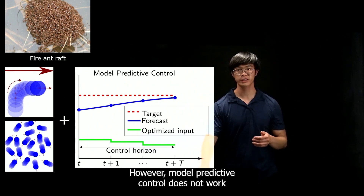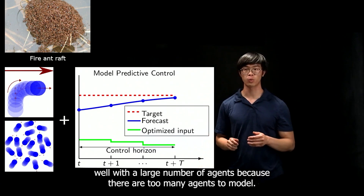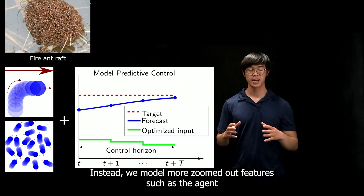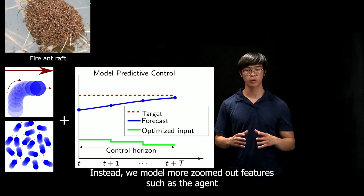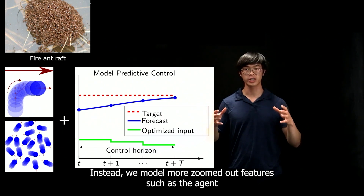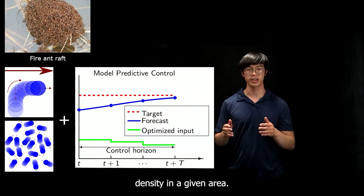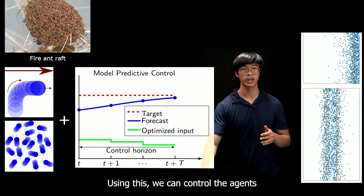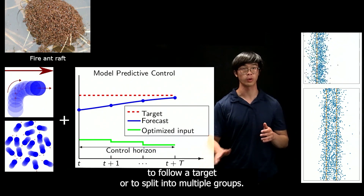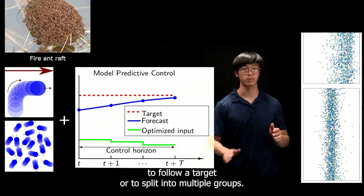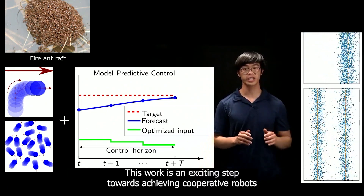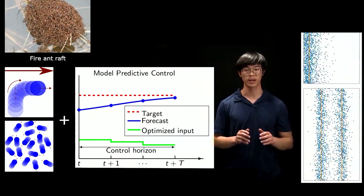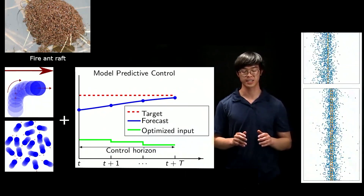However, model predictive control does not work well with a large number of agents because there are too many agents to model. Instead, we model more zoomed-out features, such as the agent density in a given area. Using this, we can control the agents to follow a target or to split into multiple groups. This work is an exciting step towards achieving cooperative robots that can carry out various tasks.